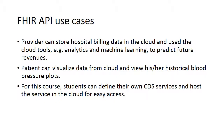Let's look at some use cases for the Google Cloud Healthcare API. This API has two major functions: standardization — it can convert to a standard format — and cloud tools such as machine learning, making data analysis much easier. The first use case is for the provider. It can ingest a lot of hospital billing data into the cloud and use cloud tools such as analytics and machine learning to predict future billing and revenue, making things almost real-time and very easy.